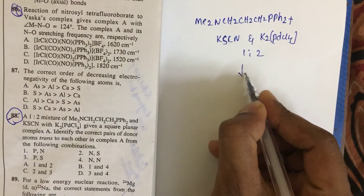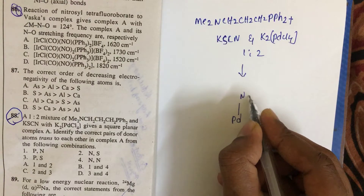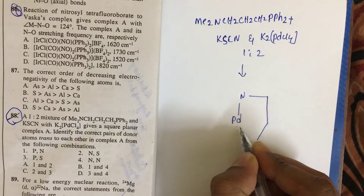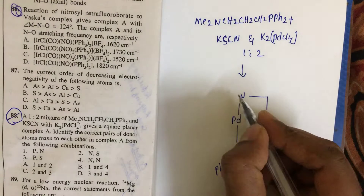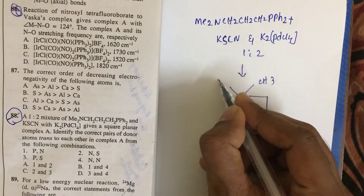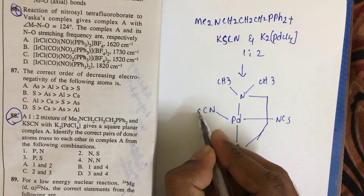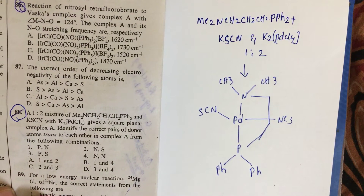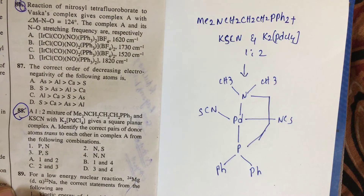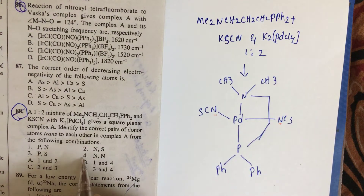The square planar complex forms with palladium at the center, with nitrogen, phosphorus, methyl, methyl, NCS, and NCS ligands. This is the complex which is forming here. If you know this complex, it's very easy to identify the answer. We can see nitrogen-nitrogen, which is present in the options.